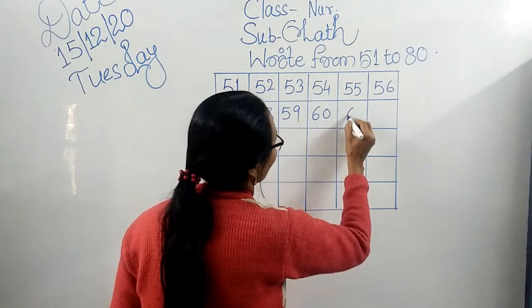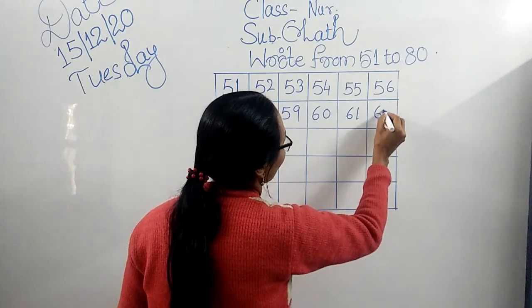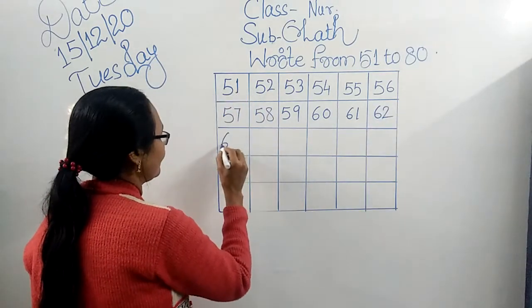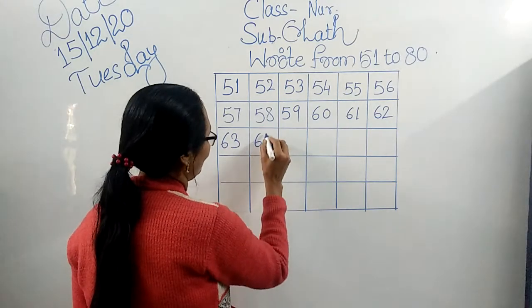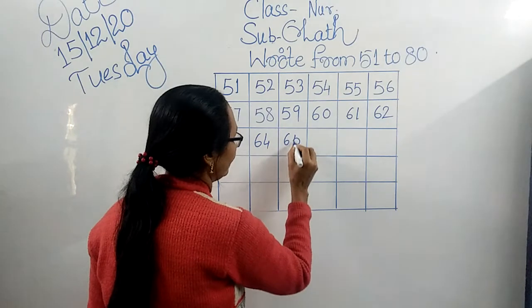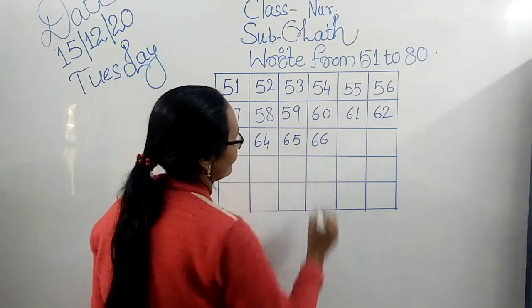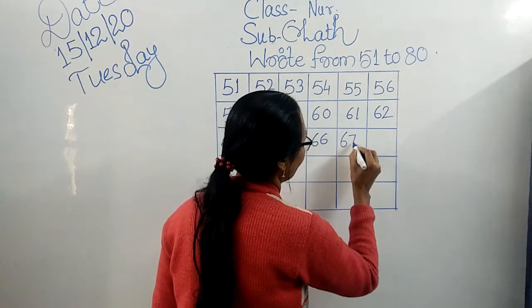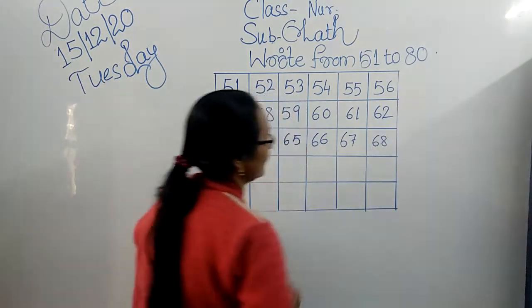6, 1 — 61. 6, 2 — 62. 6, 3 — 63. 6, 4 — 64. 6, 5 — 65. 6, 6 — 66. 6, 7 — 67. 6, 8 — 68.